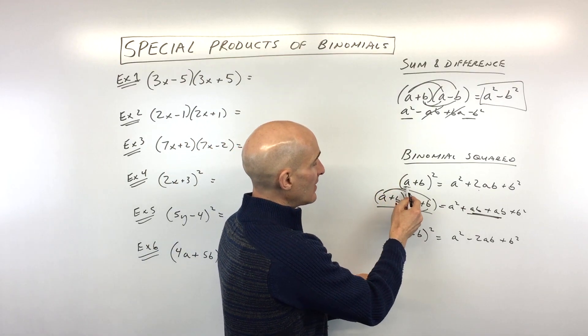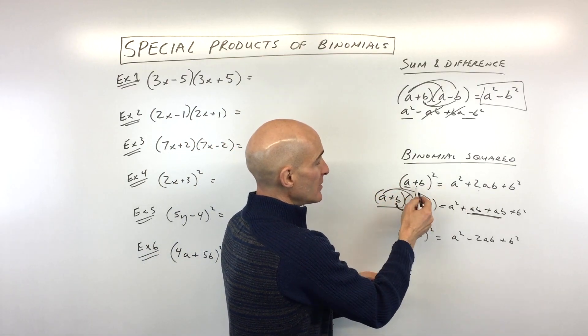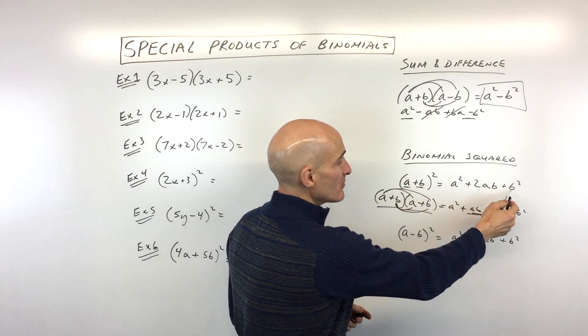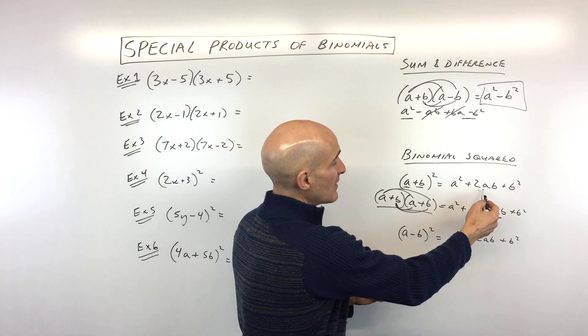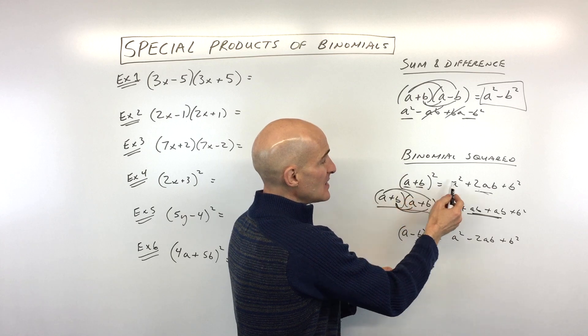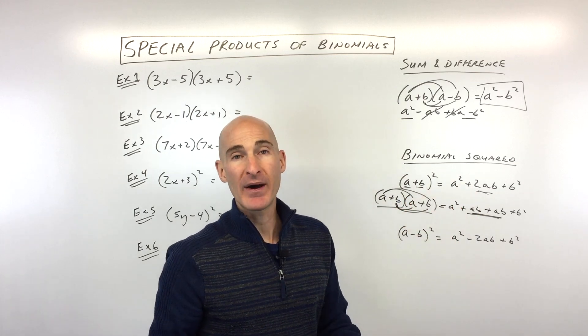We're going to talk about a quicker way of doing it. The quicker way is you take the a, the first term, squared. You take the b, that's the second term, and you square it. But to find the middle term, you multiply a times b, and then you double it or multiply it by 2.